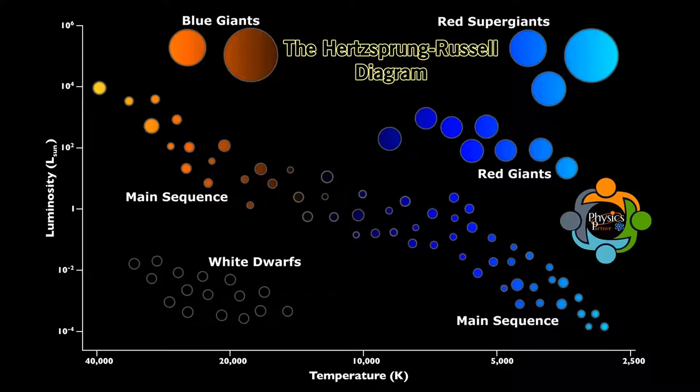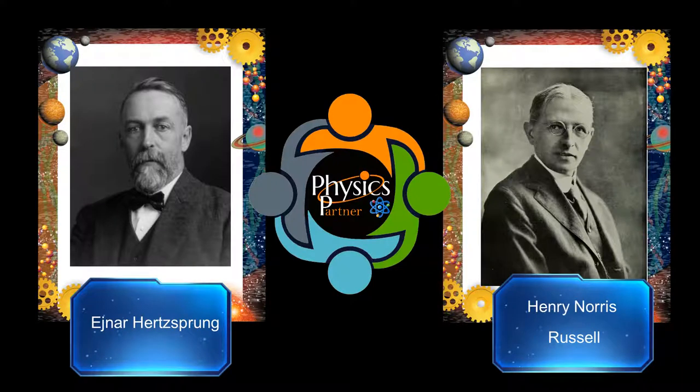The Hertzsprung-Russell diagram is one of the most important tools in the study of stellar evolution. Developed independently in the early 1900s by Ejnar Hertzsprung and Henry Norris Russell, it plots the temperature of stars against their luminosity.